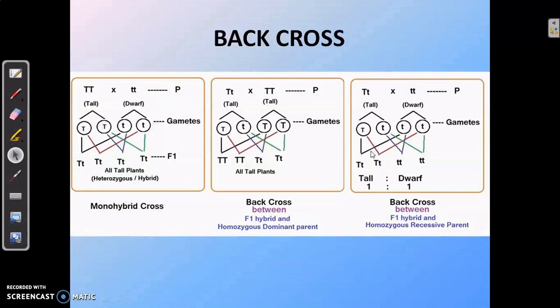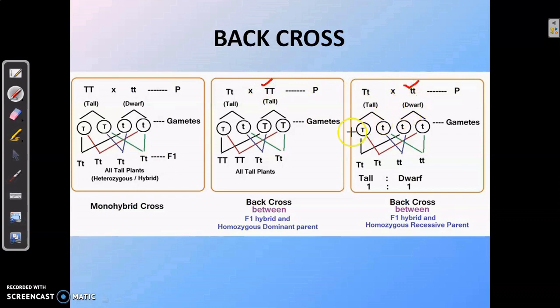Now let us understand what a back cross is from this simple cross. A tall plant is crossed with a dwarf plant. The P-generation plants are pure, that is homozygous in nature. The F1 hybrids obtained are all heterozygous in nature — that is heterozygous tall plants. A back cross is a cross of these hybrid F1 plants with either of its parents — that is either with the dominant tall homozygous parent or the dwarf homozygous parent.